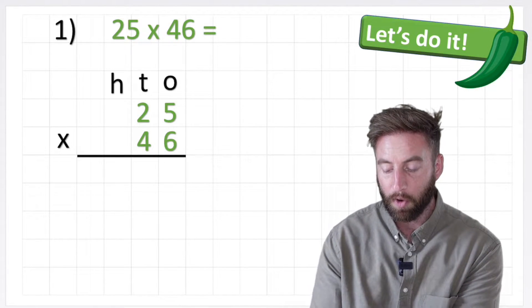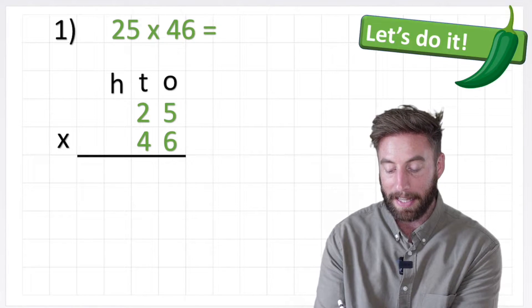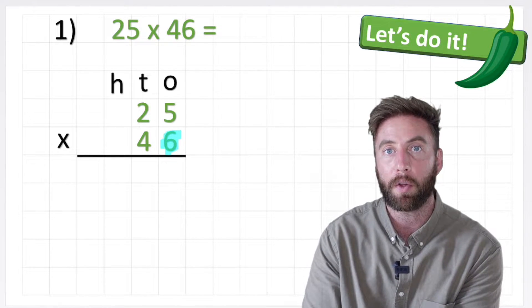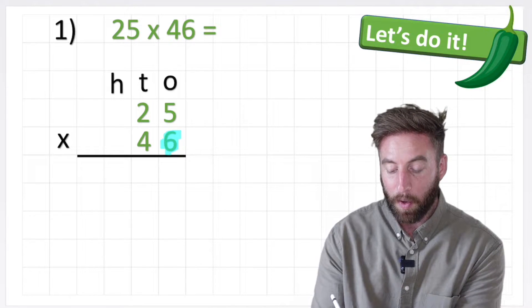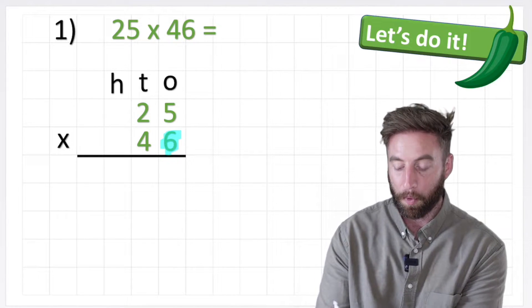So we're going to look at the bottom row. Let's take a look at 46, specifically the 6 which is the smallest value of that number, and what I'm actually going to be doing is multiplying 6 times 25, the top row.